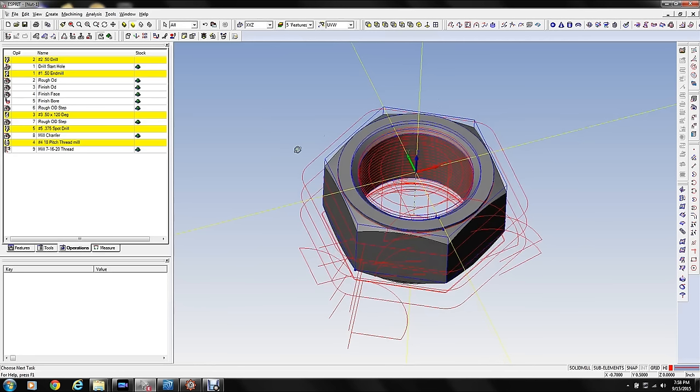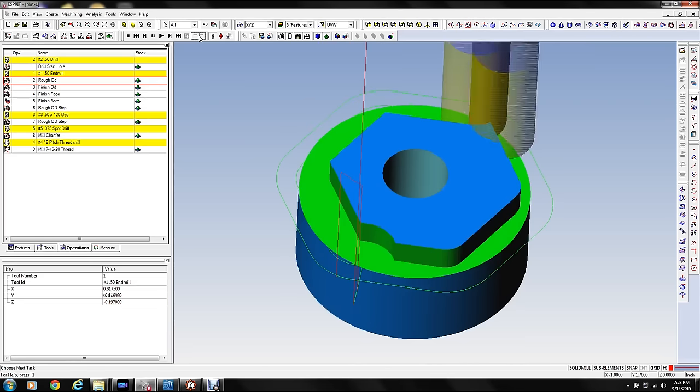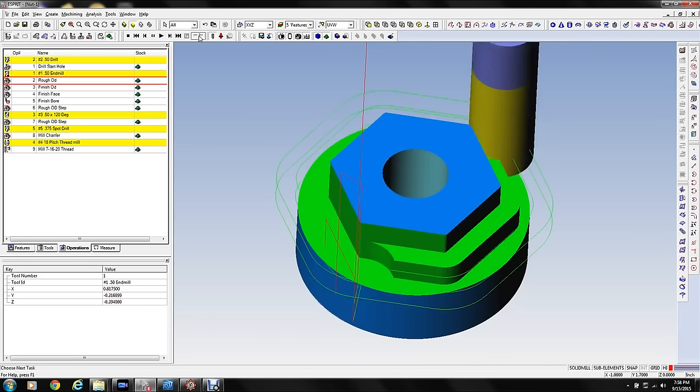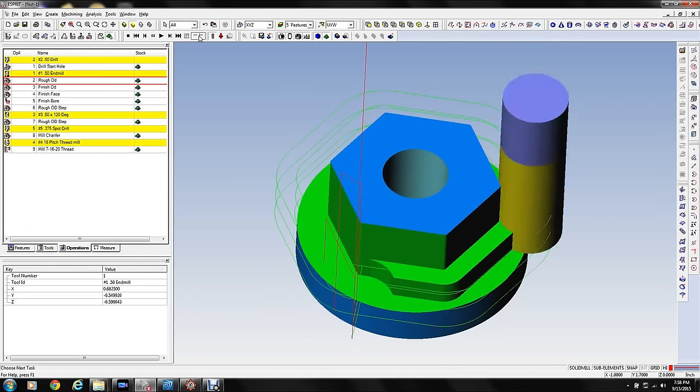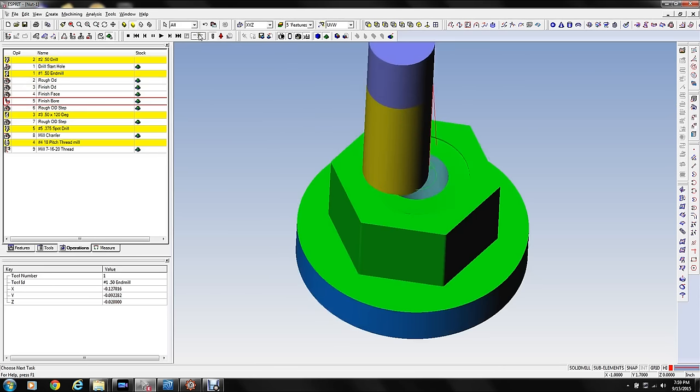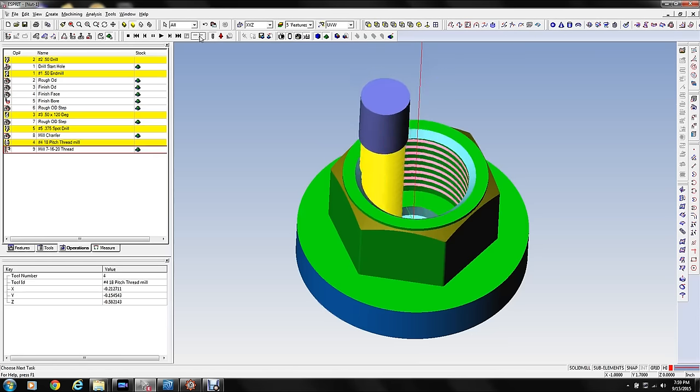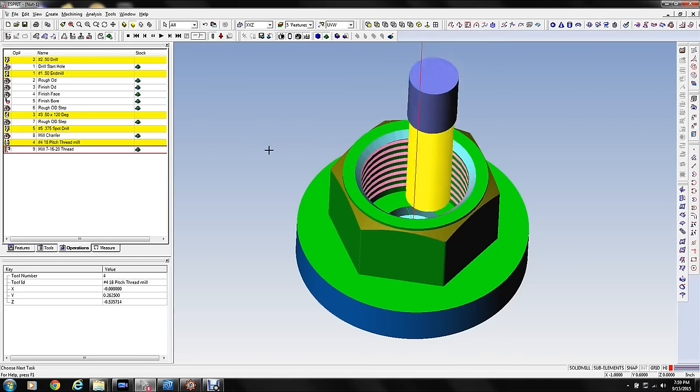Anyway, we're going to use it here to do this. I'm going to run through the simulation so you can see what's going to happen. We're going to drill a starting hole in the middle of the part, the stock, and then we're going to mill off the hex on the OD and then finish the OD with the same end mill. It's going to finish the face and mill out the bore for the thread with this helix, and then a little step on the OD, and then chamfer that step, chamfer the ID, come back with the thread milling tool and mill the thread.